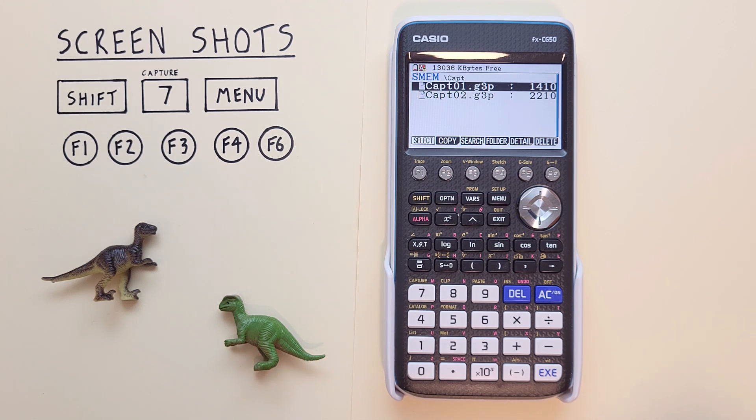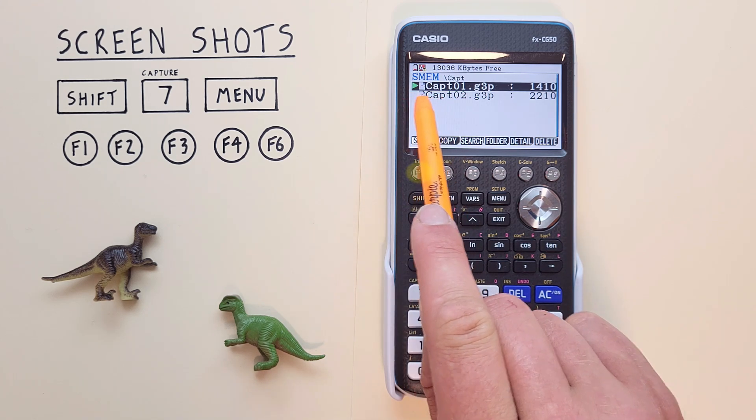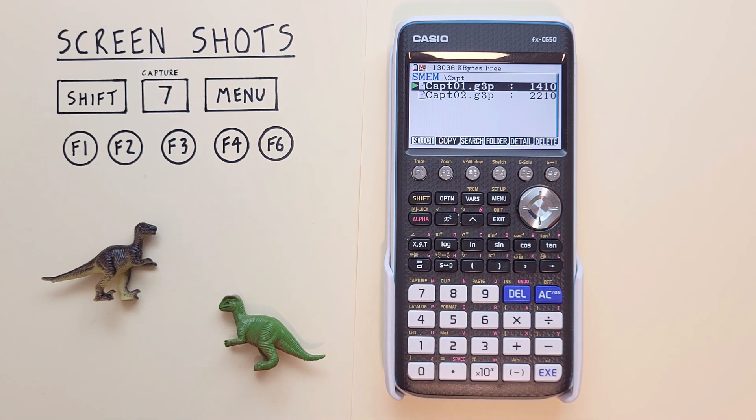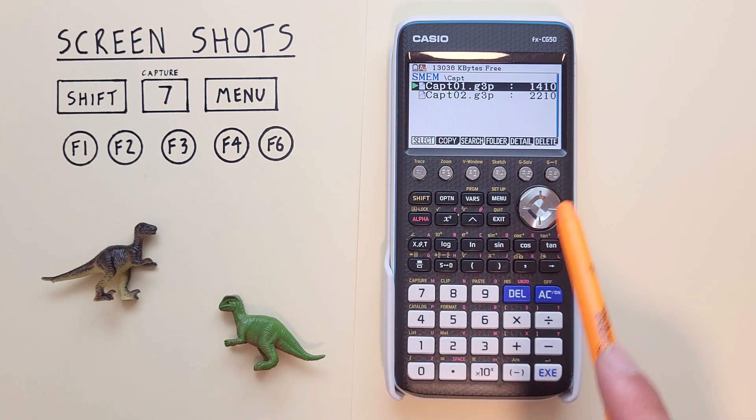Let's say we are done with these screenshots and want to get rid of them to make more room on our calculator. We can either overwrite them with a new screenshot. Or if we just want to delete them, we press F1 to select them. And you see the arrow up here beside it. And if we just want to delete that one there, we hit delete.